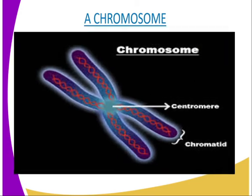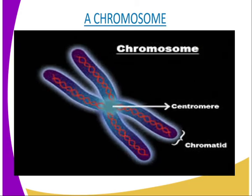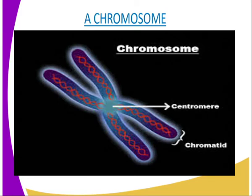In the nucleus there are a number of long thread-like structures called chromosomes. Each cell normally has a fixed number of chromosomes. Each chromosome is made up of two parallel strands called chromatids; a single one is known as a chromatid. Each pair of chromatids is connected at one point by a structure known as the centromere, which is visible on our screen.